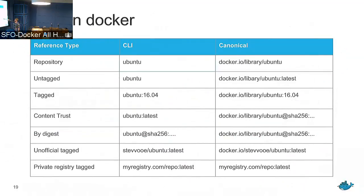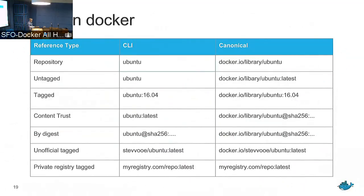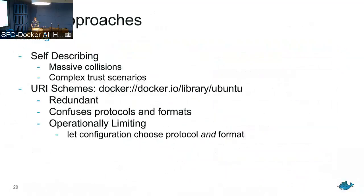A reference with a hash, a 'latest' tag resolved to a hash — you can represent all of these different content sources as a full canonical path. In the final example we have a full expanded 'myregistry.com/...' form. With this structure you can start seeing a pattern very good for containerd. There's a lot of flexibility to get to the canonical form, but the canonical form is more restricted.